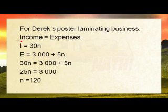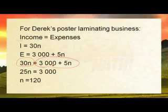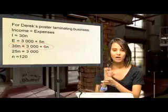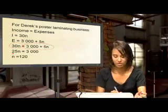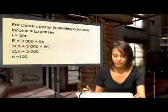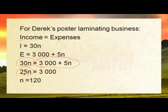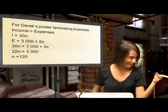Setting income equal to expenses: 30n = 3,000 + 5n. We want to get n on its own, so we move 5n to the left side — because we're moving it across the equals sign it becomes negative: 30n − 5n = 3,000, giving us 25n = 3,000. Dividing both sides by 25 gives n = 120. That confirms the 120 posters from our earlier graph reading.